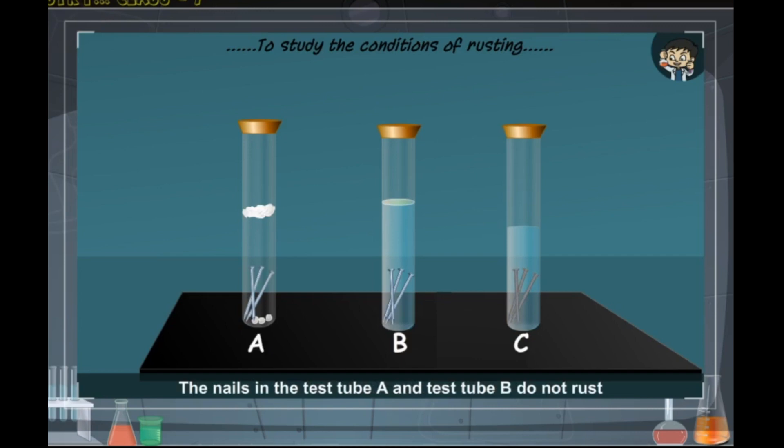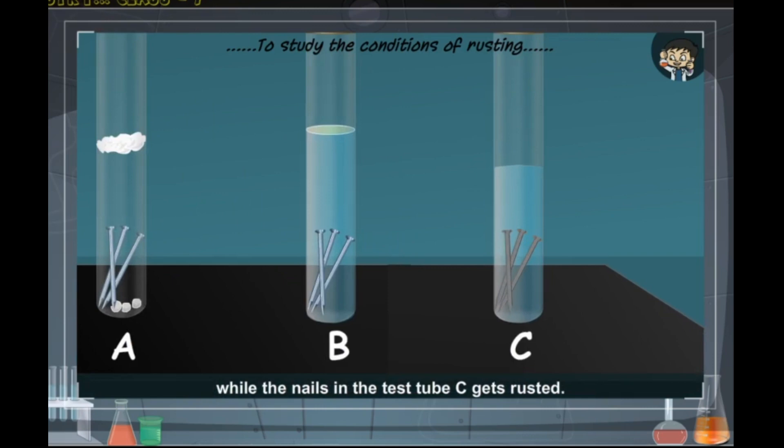Observation: The nails in test tube A and test tube B do not rust, while the nails in test tube C get rusted.